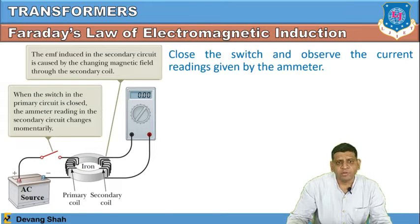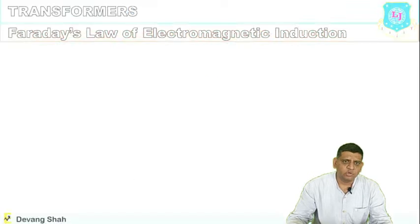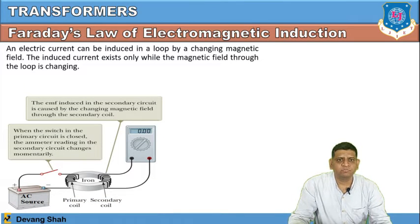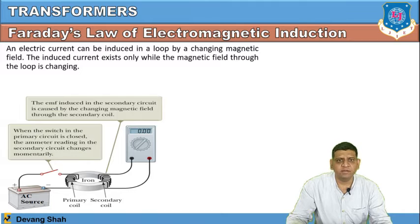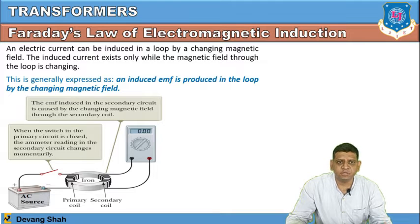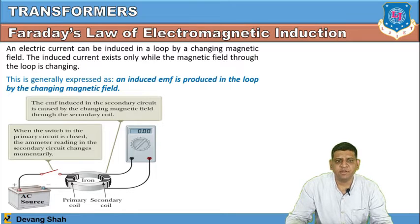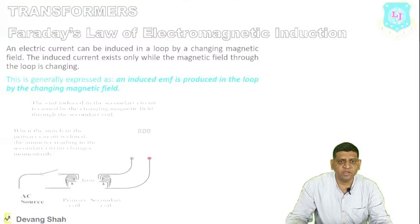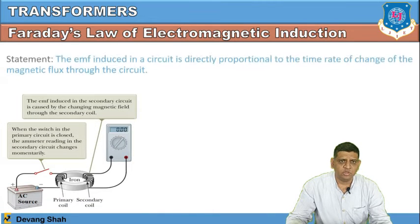That magnetic flux is cut by the secondary winding, and you can realize the rate of change of magnetic flux with respect to time, causing EMF to be induced in the secondary winding. The EMF induced in the secondary circuit is caused by the changing magnetic field through the secondary coil — that is the main statement of Faraday's law of electromagnetic induction. An electric current can be induced in a loop by a changing magnetic field; the induced current exists only while the magnetic field through the loop is changing.